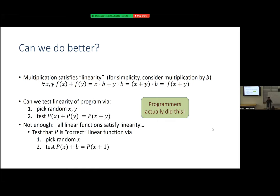Obviously linearity testing alone is not enough — if your program always outputs zero, it will satisfy the linearity test. Any linear function satisfies it. So after the linearity test proves you're close to a linear function, you still have to check it's the right linear function. In this particular case of integer multiplication, you just check that neighbors differ by B — that P(x) and P(x+1) differ by B for most x. You can show that's enough.